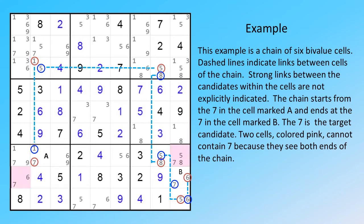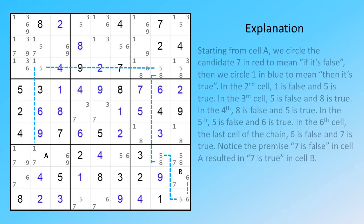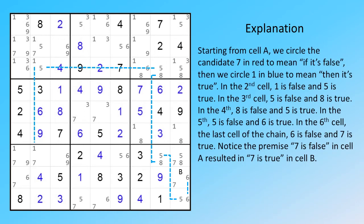Two cells colored pink cannot contain 7 because they see both ends of the chain. Starting from cell A, we circle the candidate 7 in red to mean if it's false, then we circle 1 in blue to mean then it's true. In the second cell, 1 is false and 5 is true. In the third cell, 5 is false and 8 is true. In the fourth, 8 is false and 5 is true. In the fifth, 5 is false and 6 is true. In the sixth cell, the last cell of the chain, 6 is false and 7 is true.